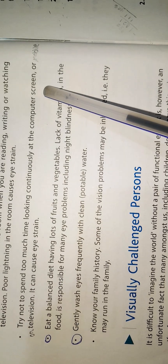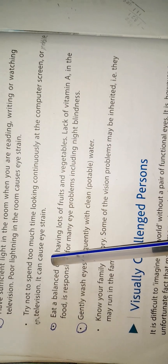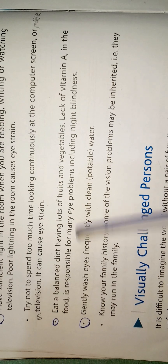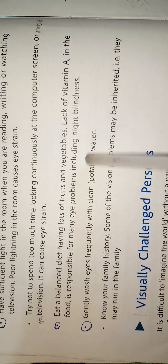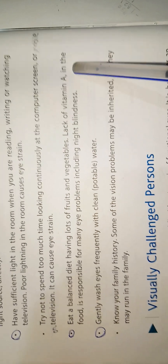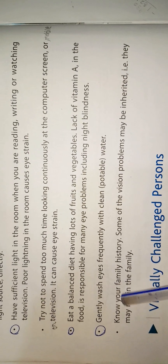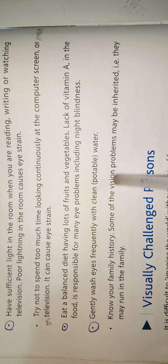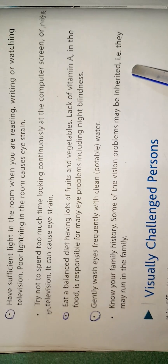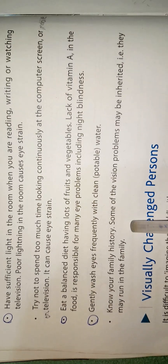Try not to spend too much time looking continuously at a computer screen or television, as it can cause eye strain. Eat a balanced diet having lots of fruits and vegetables. Lack of vitamin A in the food is responsible for many eye problems including night blindness, so we have to eat plenty of vitamin A rich foods. Gently wash your eyes frequently with clean or potable water. Also know your family history, as some vision problems may be inherited and may run in the family.